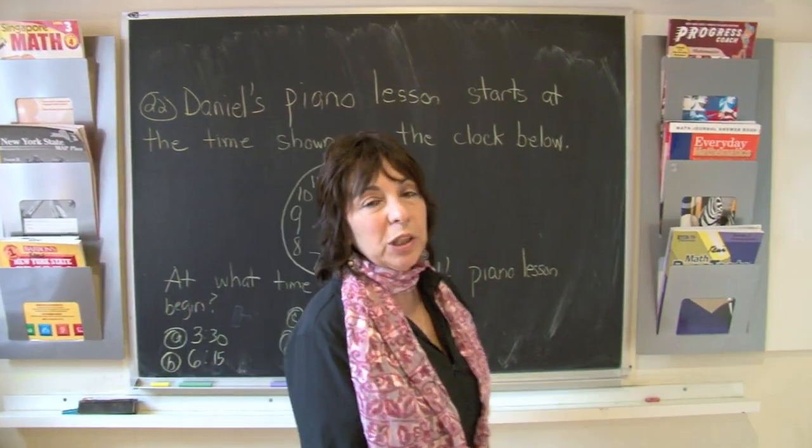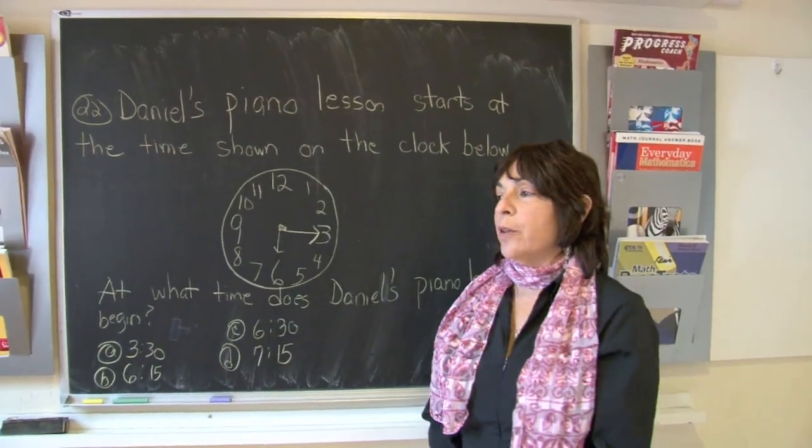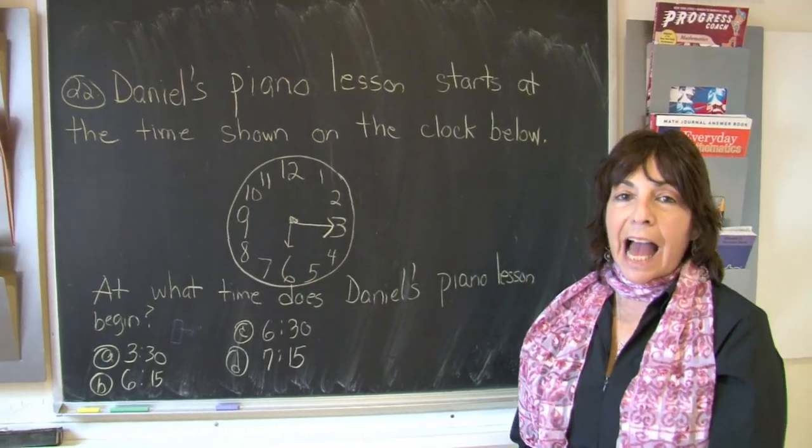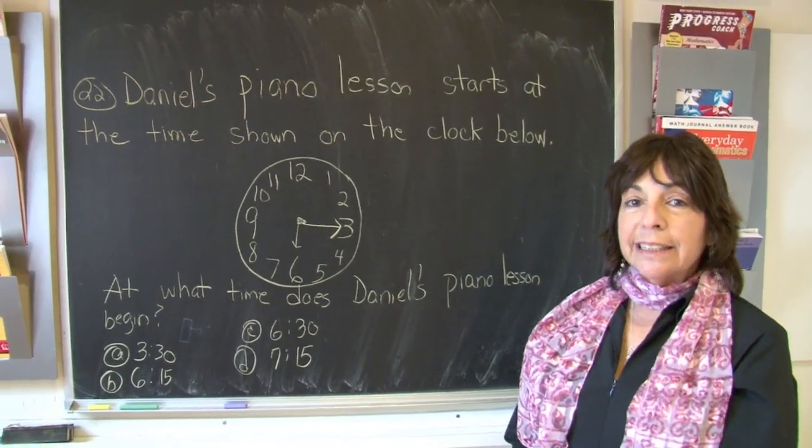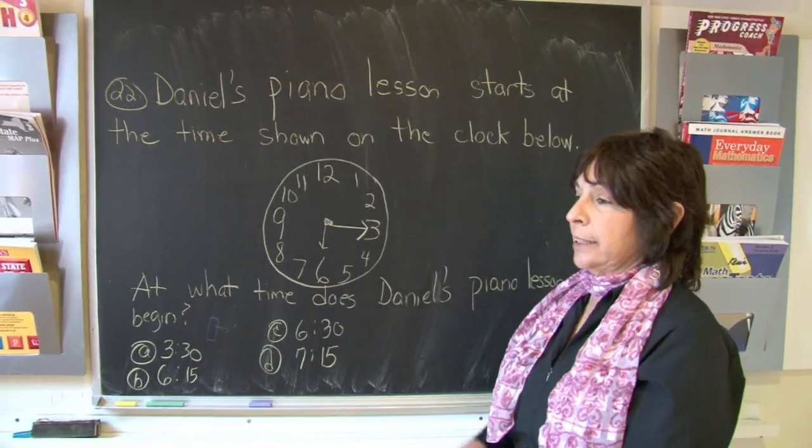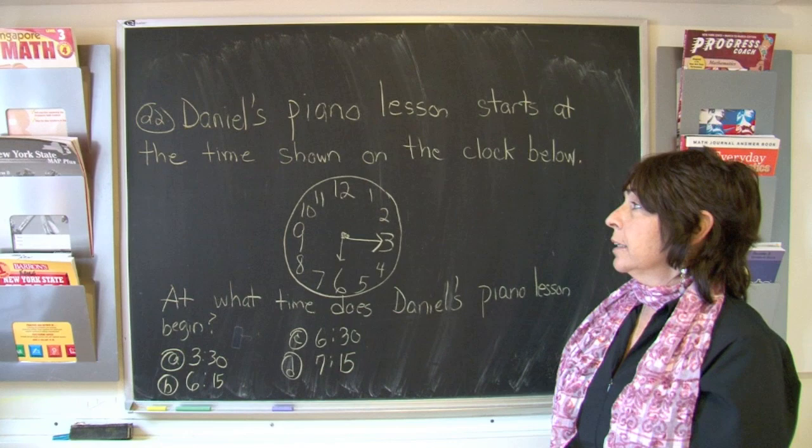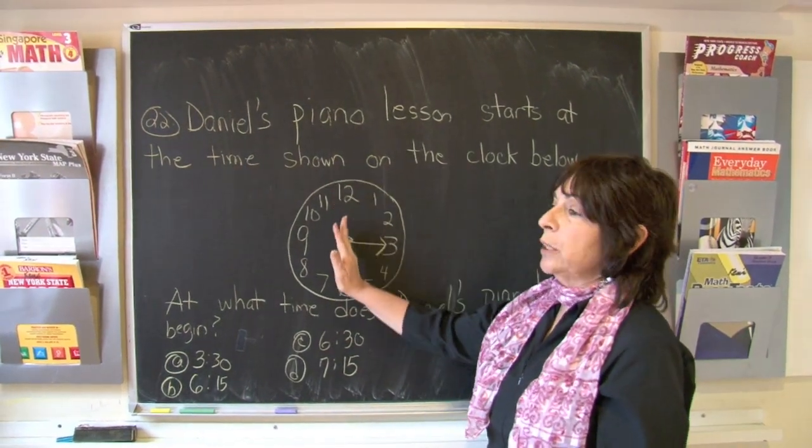Boys and girls, when you're doing the clock, you need to know that the smaller hand, the shorter hand, is the hour hand. So that tells us what hour it is. The longer hand is the minute hand. When it is on twelve, it is always o'clock.